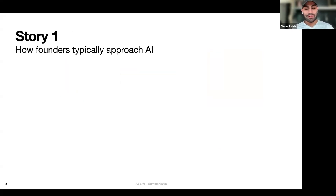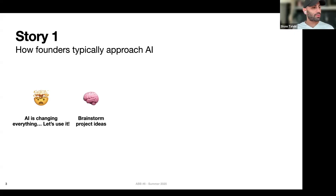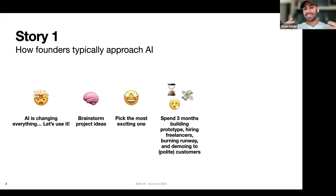The typical story of founders or small to medium sized businesses using AI goes something like this: someone sees something or has a ChatGPT experience, or has a conversation at a cocktail party. They realize AI is changing everything and that they need to use it. What comes next is brainstorming project ideas, picking the most exciting one, and then spending about three months trying to build a prototype, hiring consultants and freelancers, burning through runway, and demoing it to very polite customers.